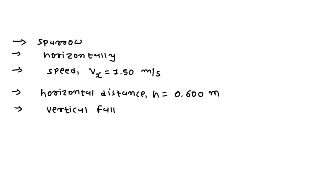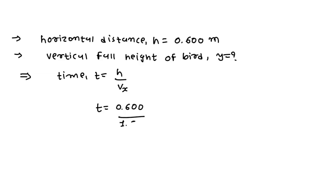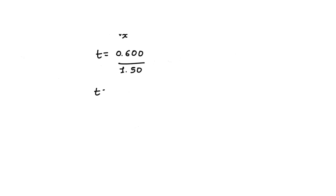We want to find the vertical fall height of the bird, so we find the value of y. First, we find the value of time: t equals h divided by vx. Substituting values, t equals 0.600 divided by 1.50, which gives t equal to 0.4 seconds.